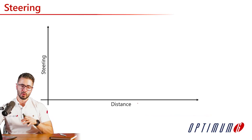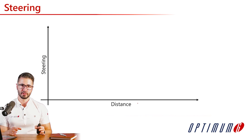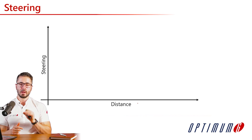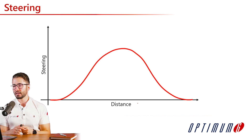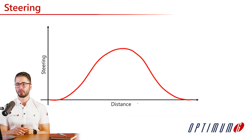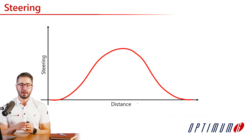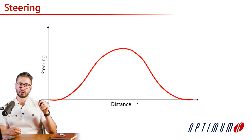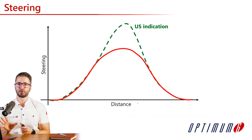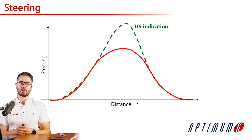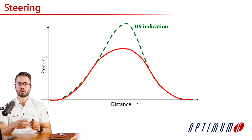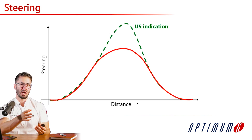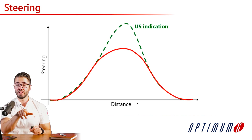Once we understand where one driver is struggling compared to the other, we read the driver inputs. How should we be reading steering traces? Assuming a baseline neutral car, we have a certain steering profile. If we have an understeering car, typically the driver is going to steer more and have a more peaky shape. This happens because the front axle is the limit — the driver tries to get more rotation from the front, but nothing happens, creating that peaky profile.